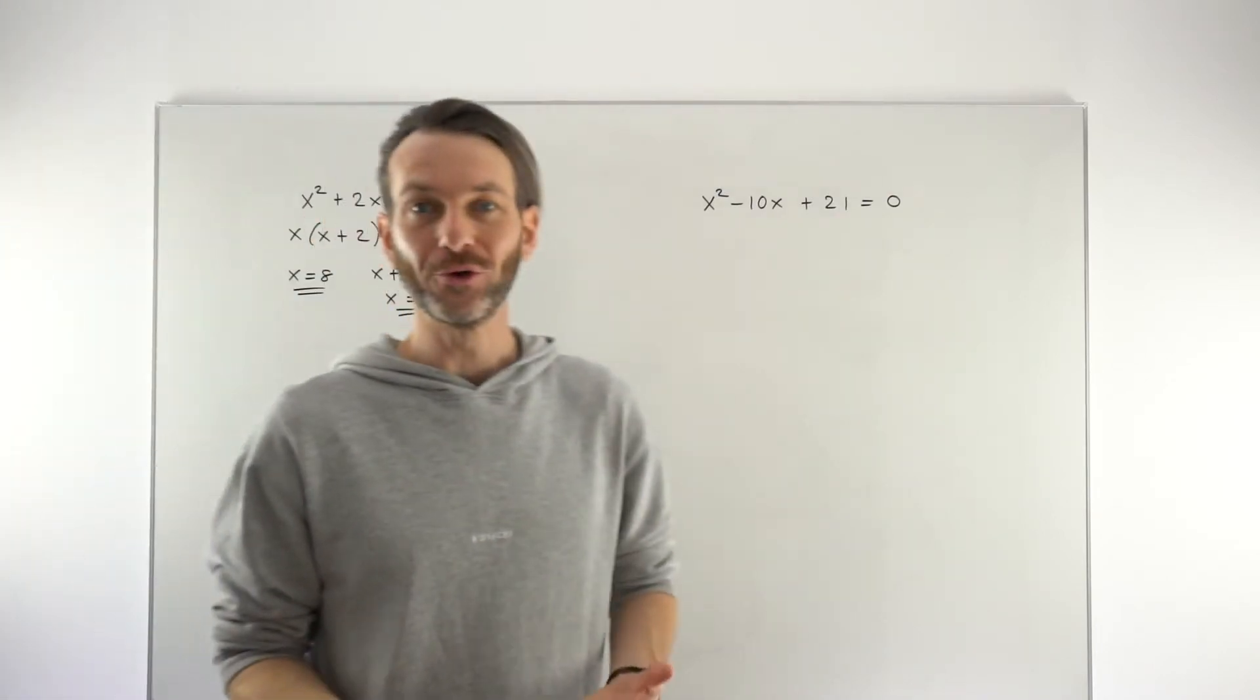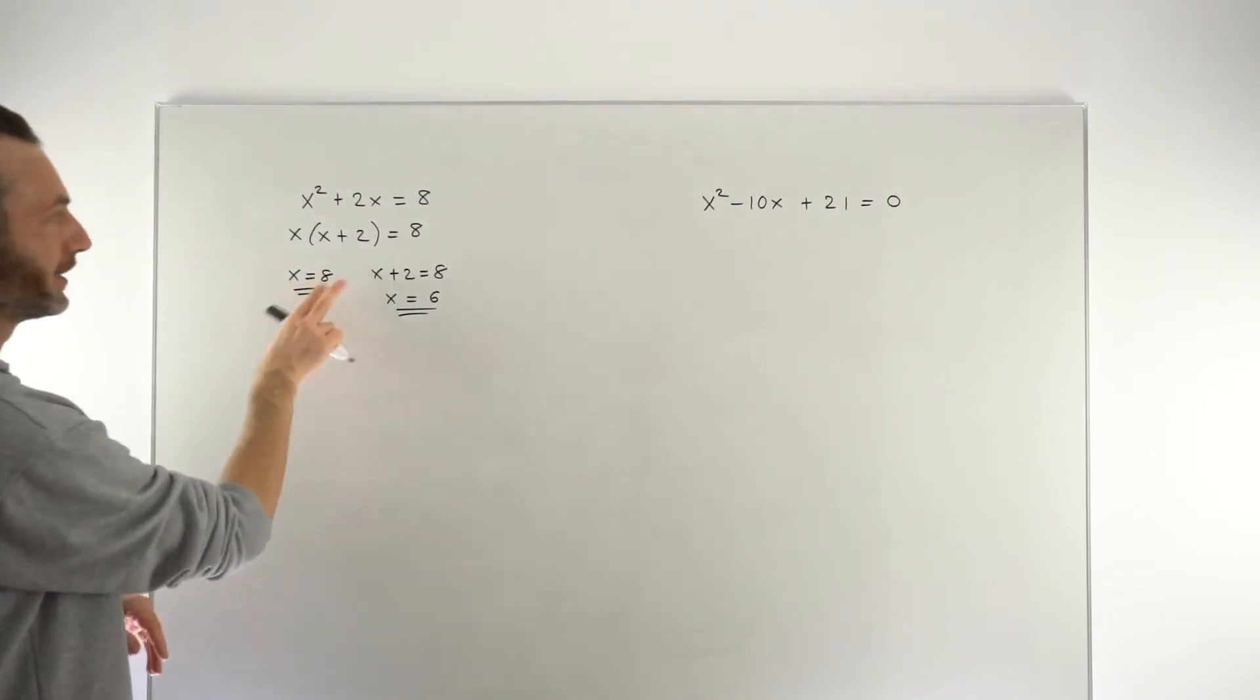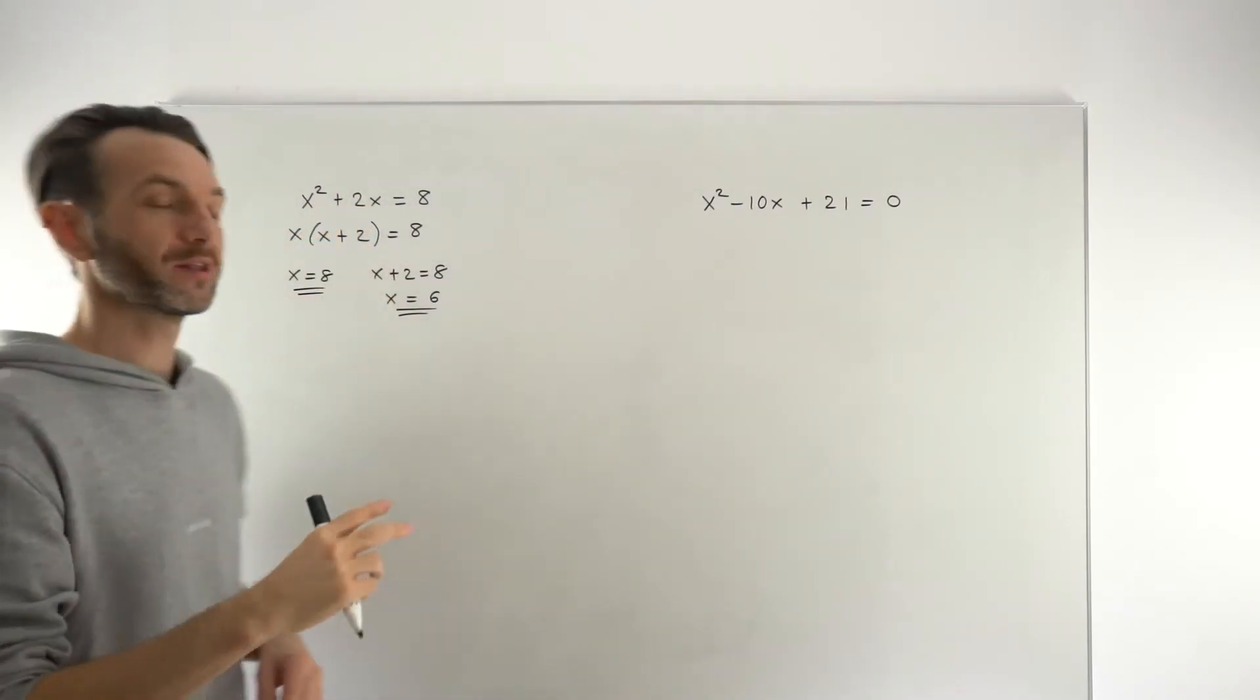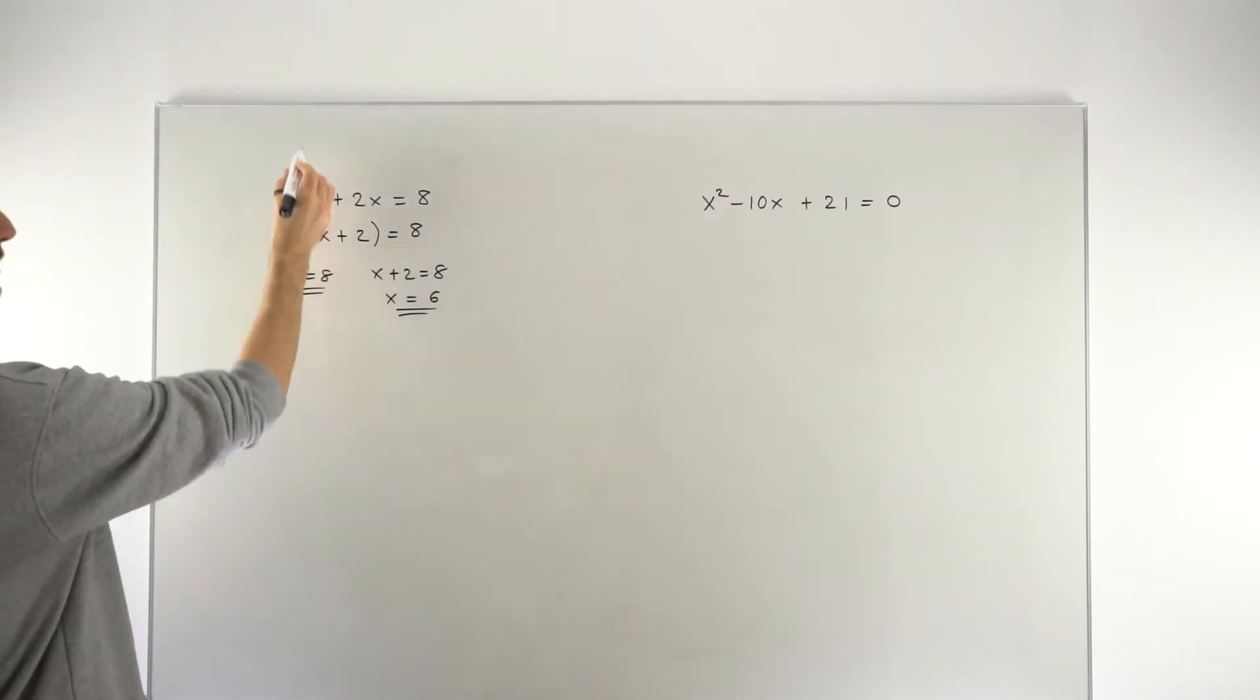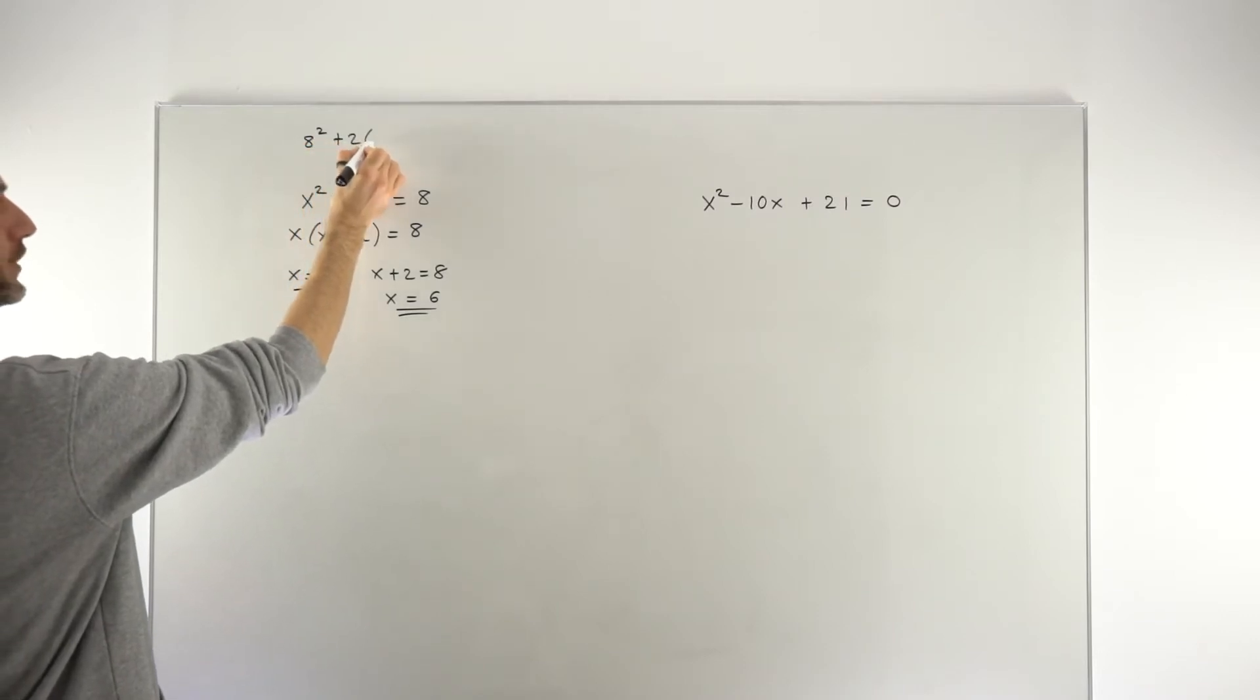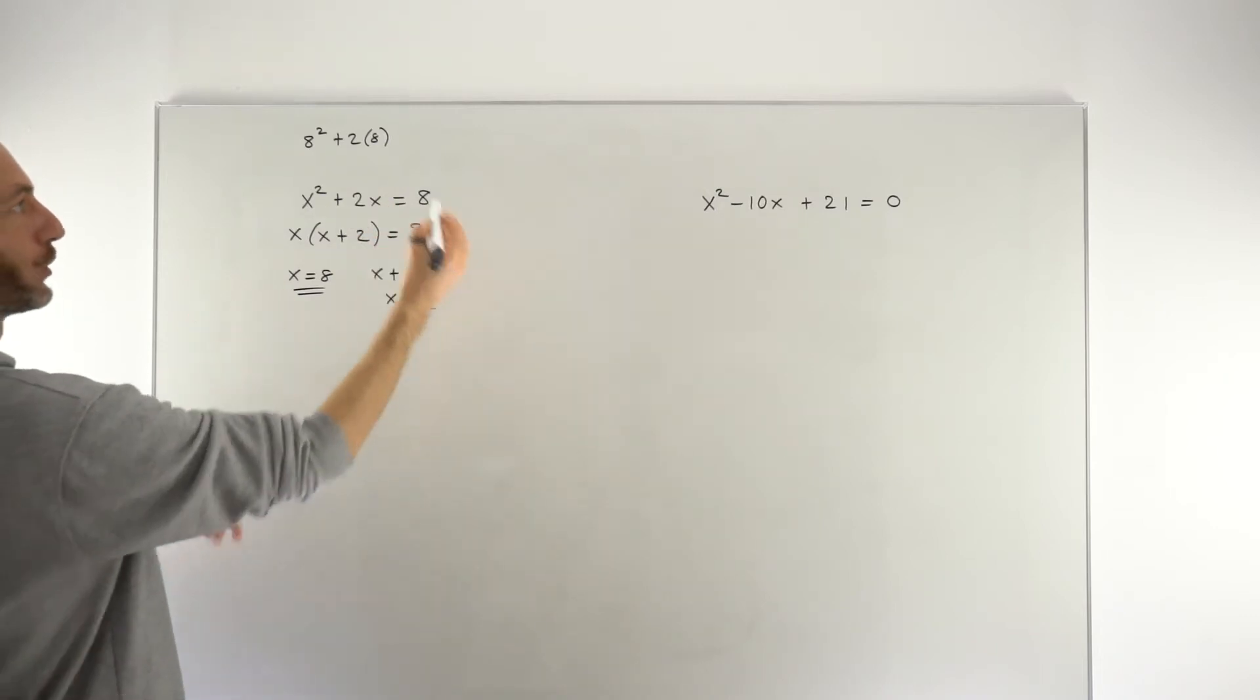Now we can test whether or not those are the correct solutions, which they're not, by plugging them back into the original equation because the solutions to any equation should satisfy the original equation. So if we take for example the 8 and put it back into the original so we get 8 squared plus 2 times 8 then that should all total up to be 8 if the equation is going to be satisfied.